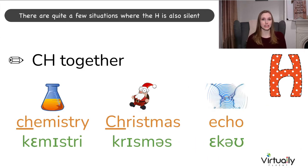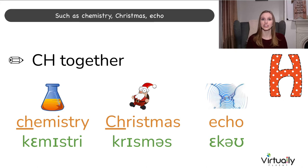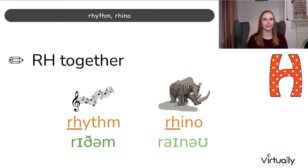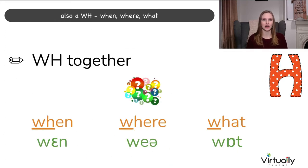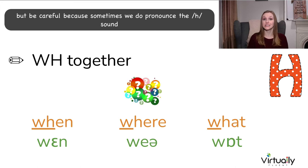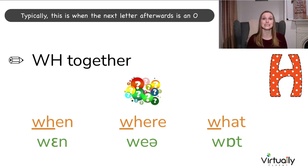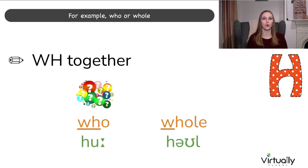There are quite a few situations where the H is also silent. For example, CH — such as chemistry, Christmas, echo — or when we have RH next to each other: rhythm, rhino. Also WH: when, where, what. But be careful — sometimes we do pronounce the H sound. When we see WH next to each other, typically this is when the next letter is an O — for example: who or whole.